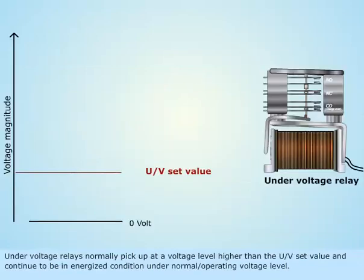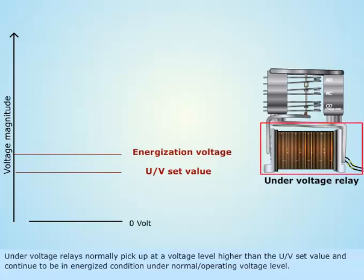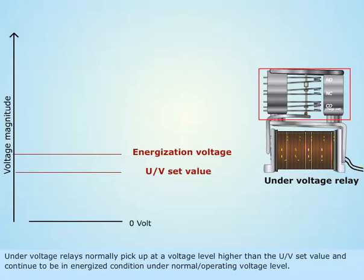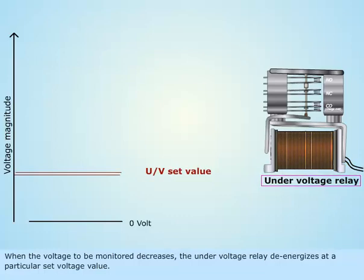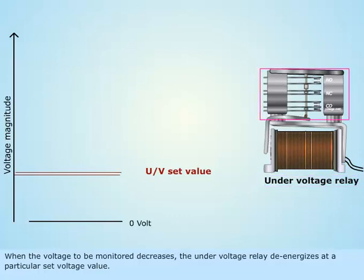Under voltage relays normally pick up at a voltage level higher than the under voltage set value and continue to be in an energized condition under normal or operating voltage level. When the voltage to be monitored decreases, the under voltage relay de-energizes at a particular set voltage value.